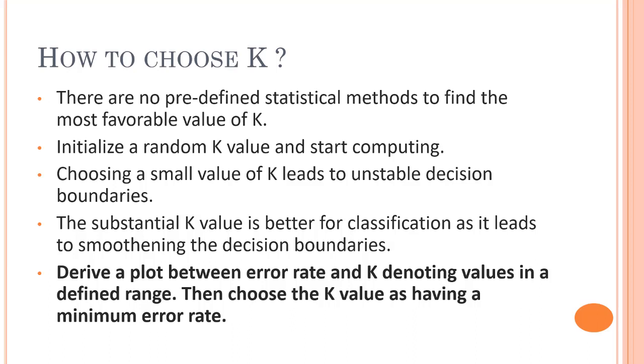Choosing a small value of K leads to unstable decision boundaries. Most of the time you will see that when your dataset is quite big and you choose the K value very less, then it will do quite unstable decision or classification.